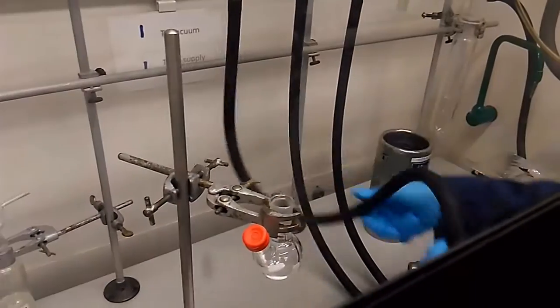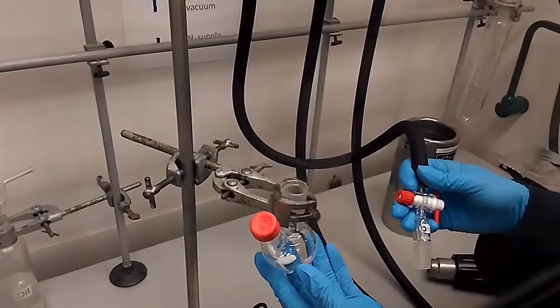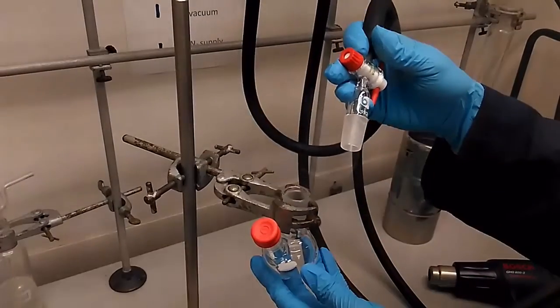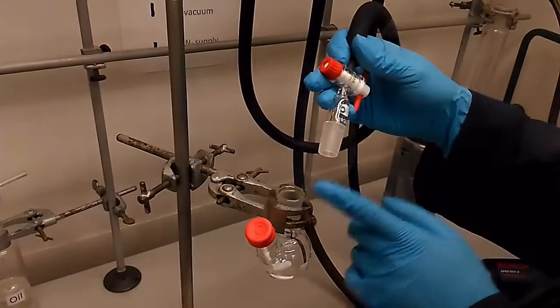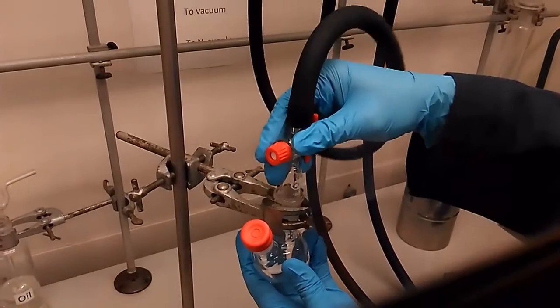We have the two neck round bottom flask with the stirring bar inside. And with one of the neck being secured with a rubber septum. And the other side, we're going to fit in with an adapter that connects to your Schlenk line.